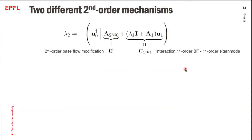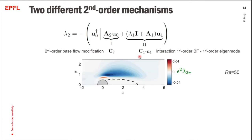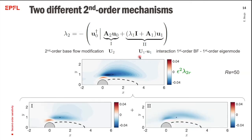We can also look at the two terms in the second-order eigenvalue variation. They correspond to slightly different mechanisms: the first term involves A2, which depends on u2, the second-order base flow modification; the second term is an interaction between the first-order base flow modification and the first-order eigenmode modification. The map shown previously is the sum of these two maps, which are fairly similar. However, the first mechanism can be destabilizing close to the cylinder, whereas the second term is only stabilizing.